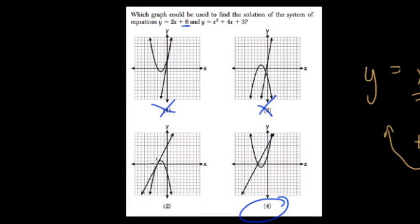And out of the two choices, 2 opens downward, it's negative, and 4 opens upward, it's positive. So 4 has to be the answer.